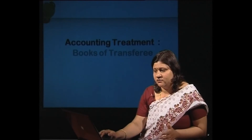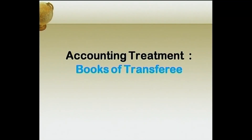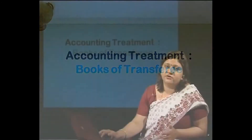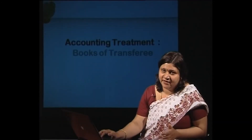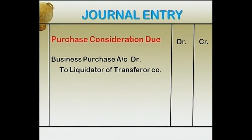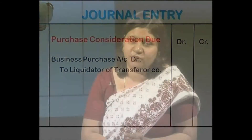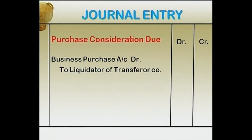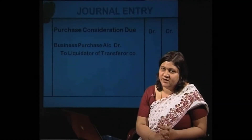Now we discuss the accounting entries in detail. For purchase consideration due — whether amalgamation in the nature of merger or purchase — the entry is the same: Business Purchase Account debit, to Liquidator of Transferor Company, with the amount of purchase consideration calculated as a working note.